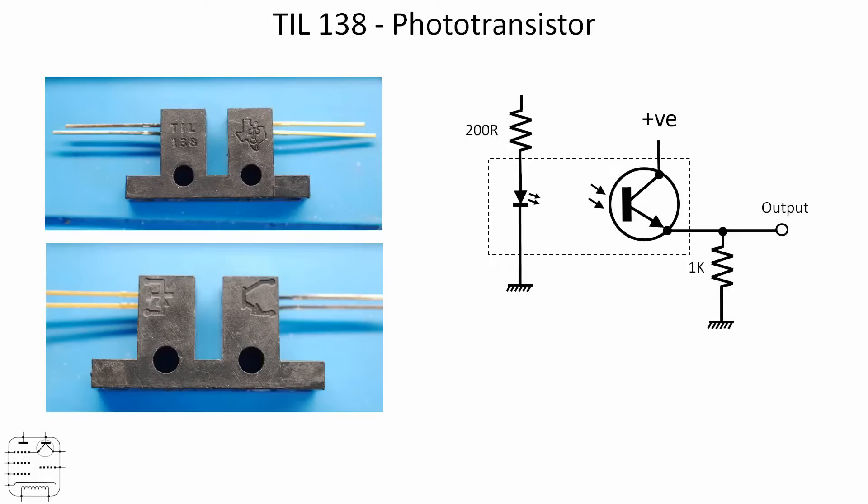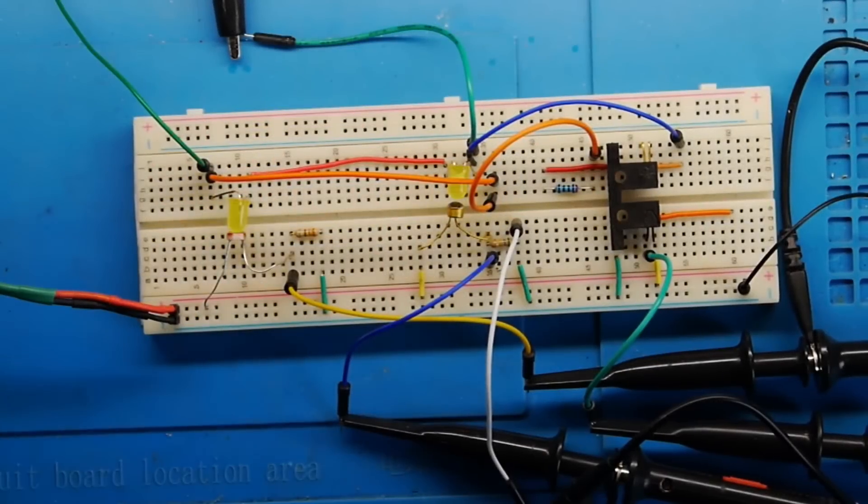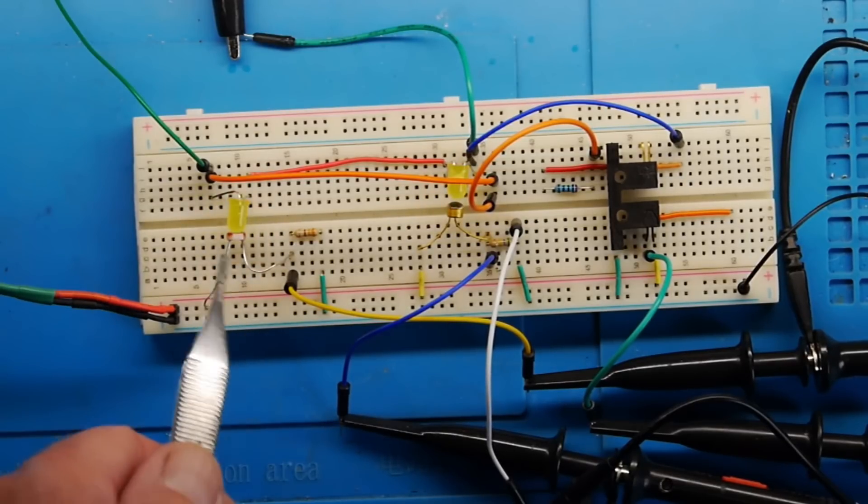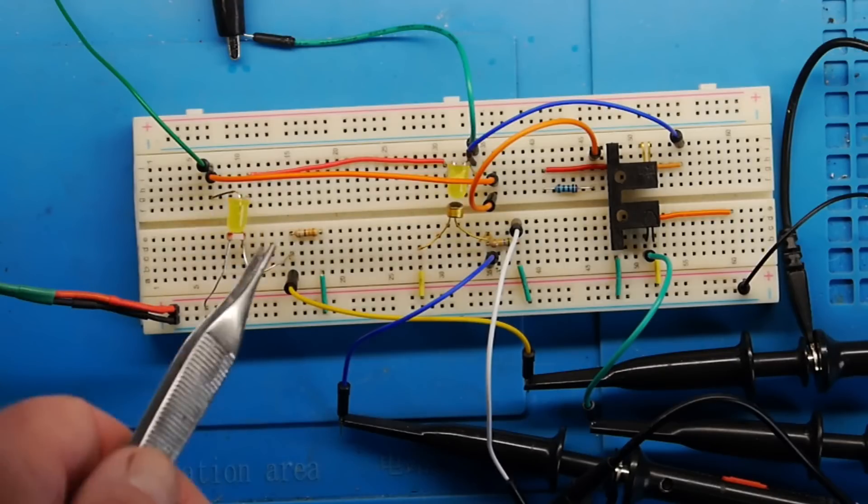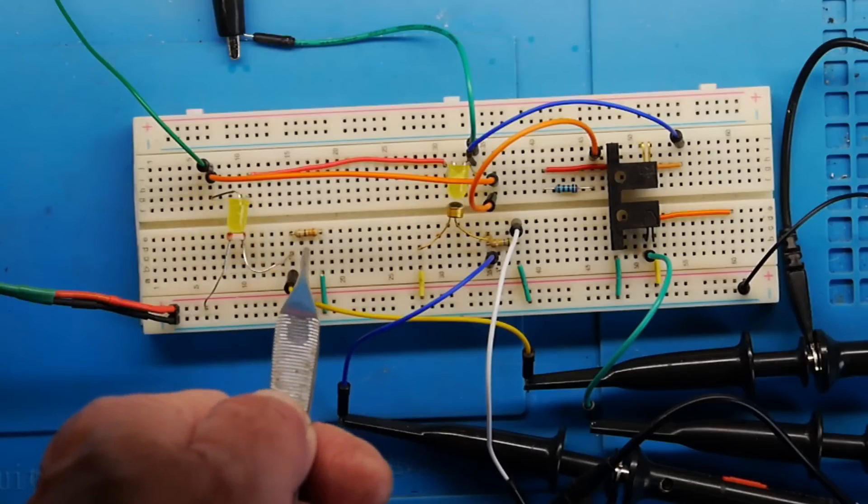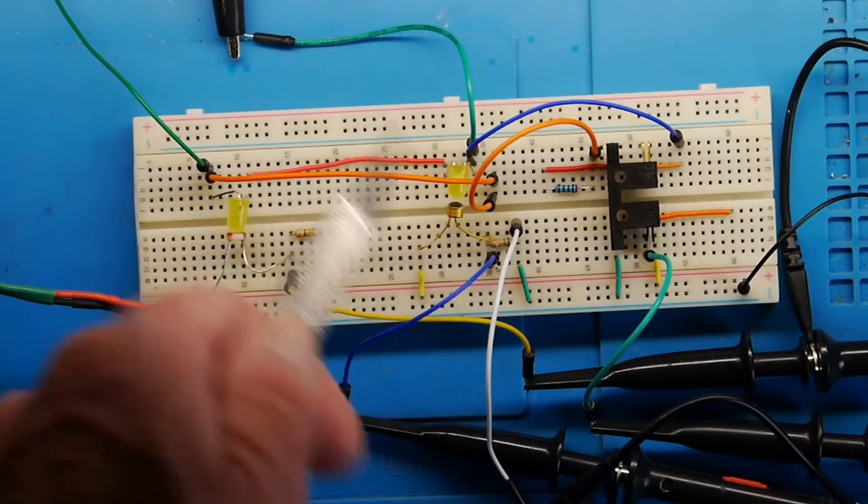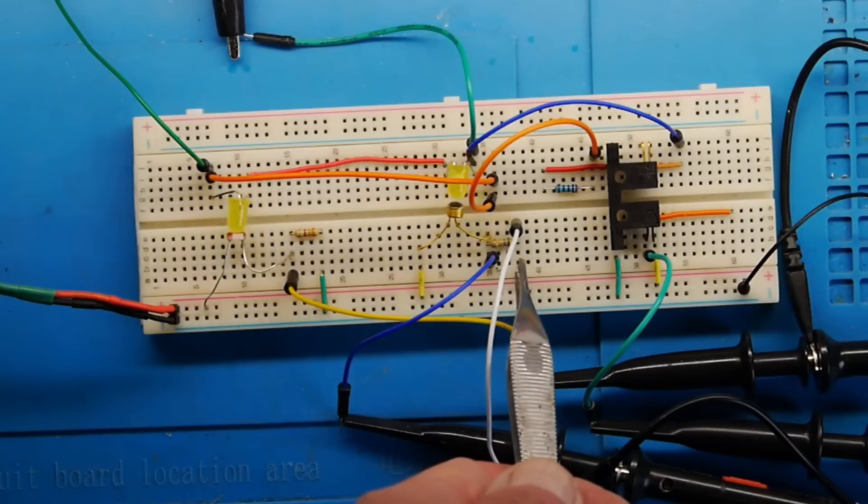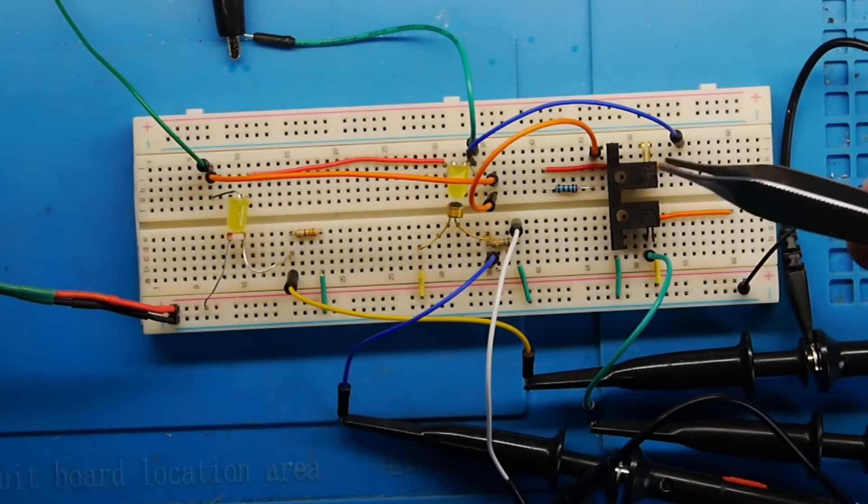Here's the arrangement on the breadboard. The LDR is there with its yellow LED pointing directly at it. There's the voltage divided resistor. The supposed photodiode is there with its resistor hidden by that white wire. Then I've got the phototransistor arranged here as per the circuit diagram in the datasheet.